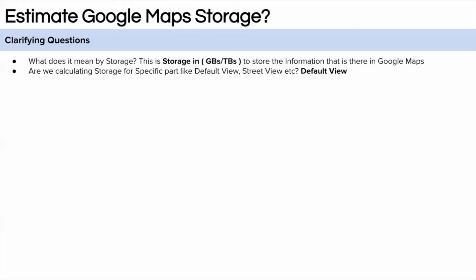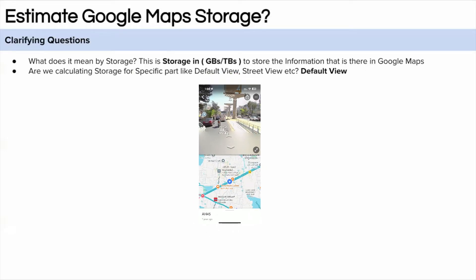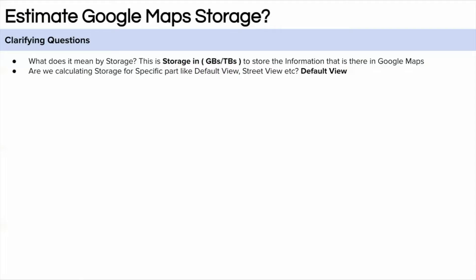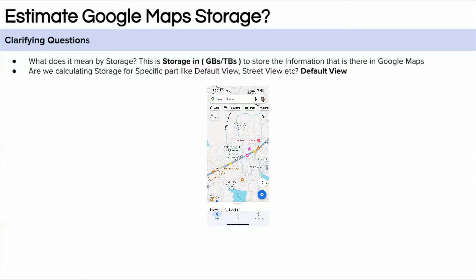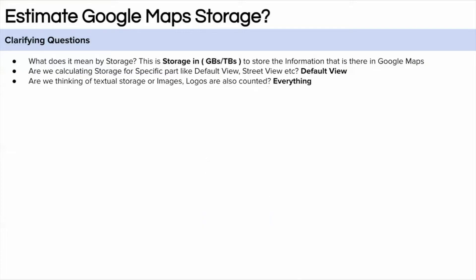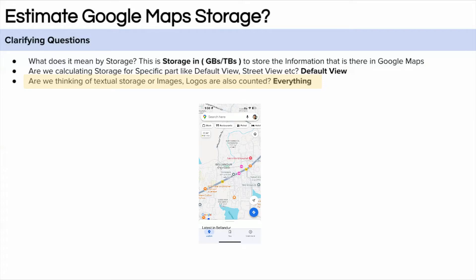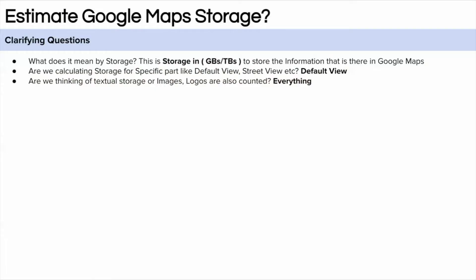Why is this question important? Because the data required for the street view will be humongous — a lot of images will be required to create a 360-degree view. So for this, let's assume we are only thinking about the normal or default view. The third question is about the type of sources. In the default view, there are street names, location names, logos, and location images. So are we considering only text, or are images also included? Let's assume our interviewer wants us to calculate everything.